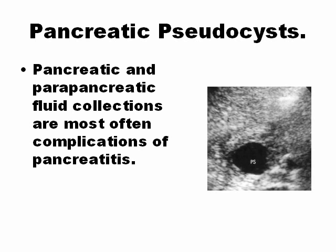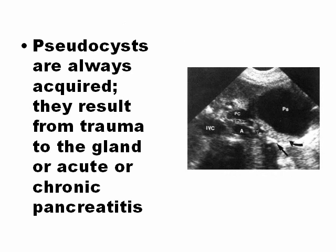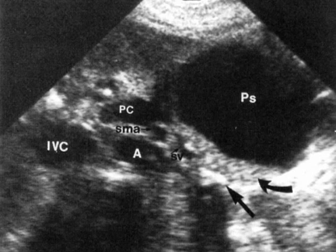Pancreatic pseudocysts are the most common complication of pancreatitis. Free fluid is another form of complication. Pseudocysts are always acquired — they can result from trauma of the gland or acute or chronic pancreatitis. In the picture you can see a pseudocyst that is anechoic, but the borders are not as regular as a true cyst. Sometimes inside the pseudocysts you can see echogenic parts.